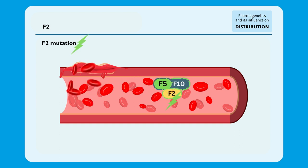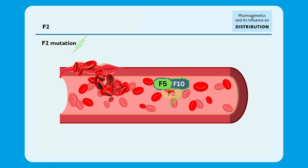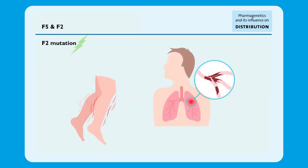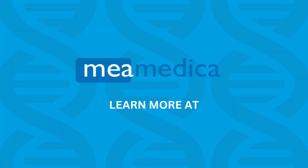A mutation in the factor II gene causes the gene to be overactive and leads to the production of too much prothrombin. An abundance of prothrombin leads to more thrombin, which promotes the formation of blood clots. The downside is that it may cause blood to clot too easily, and therefore, there is a greater chance of thrombosis.